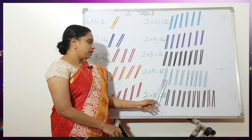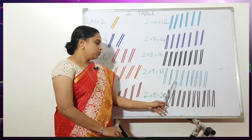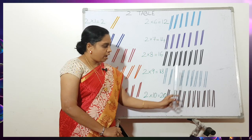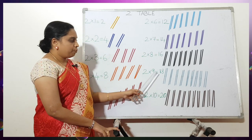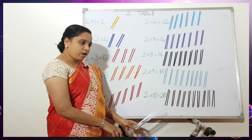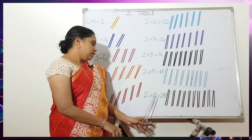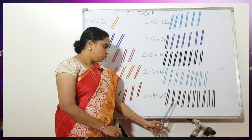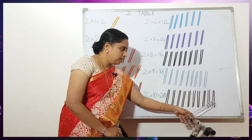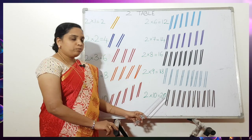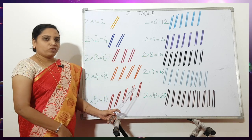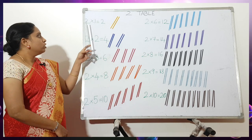9 times 2 is 18 — 1, 2, 3, 4, 5, 6, 7, 8, 9 — 9 times 2 is 18. Then the last one, children: 10 times 2 — 1, 2, 3, 4, 5, 6, 7, 8, 9, 10 — 10 times 2 is 20.